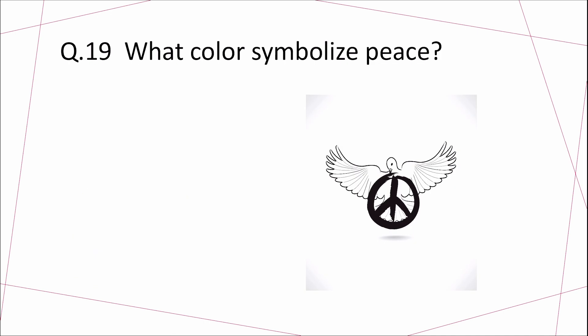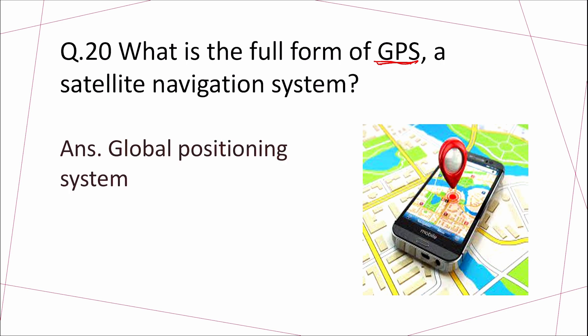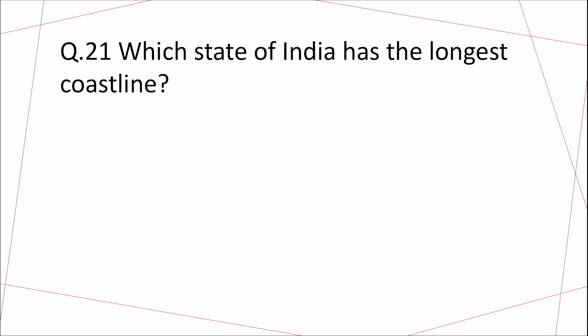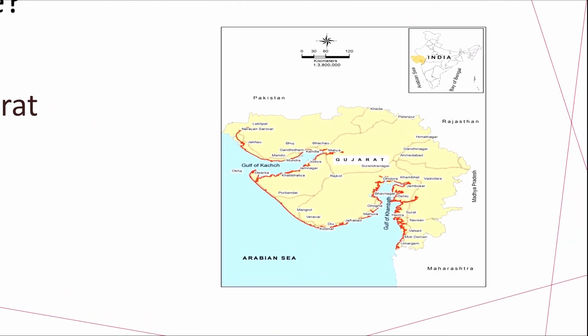Question 19: What color symbolizes peace? Answer: White. Question 20: What is the full form of GPS? Answer: Global Positioning System. Question 21: Which state of India has the longest coastline? Answer: Gujarat. This is the coastline of Gujarat.